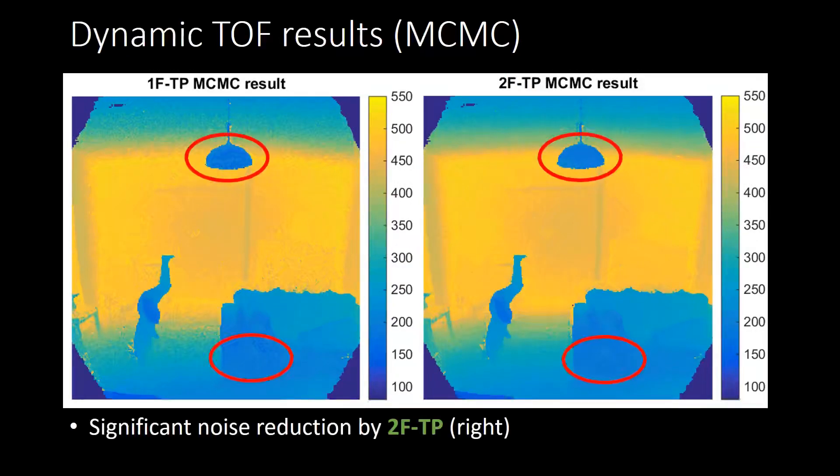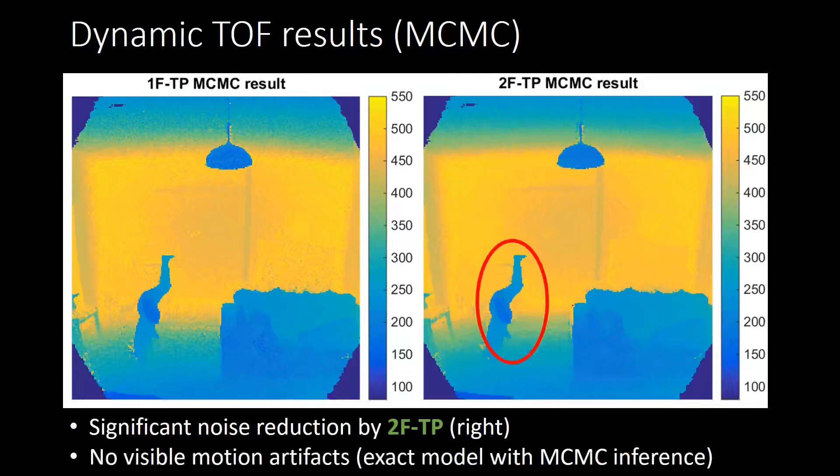First of all, in the lampshade and the sofa, there is a clear, visible reduction in depth noise in the dynamic model. Second, for objects that undergo rapid motion, we see no visible motion artifacts in the dynamic model.